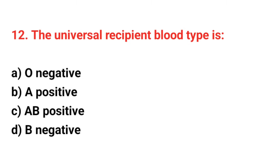Question number 12: The universal recipient blood type is? The right answer is option C: AB positive.